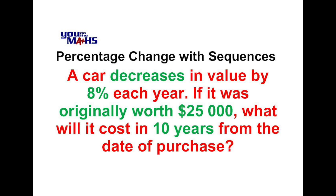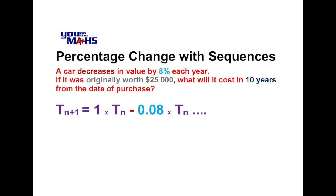As a one-off calculation — in other words just after 1 year — we'd work out 8% of 25,000 and take that away from 25,000. If we put that in sequence notation for an 8% decrease on any term, we multiply the term by 0.08 and subtract it from the original value, writing that as 1 times t(n) minus 0.08 times t(n). So we've written this almost as a recursive definition — we just haven't got a start value yet.